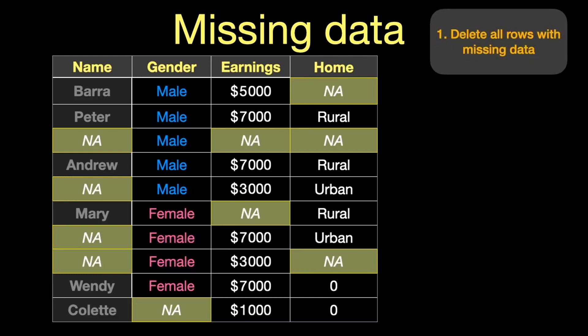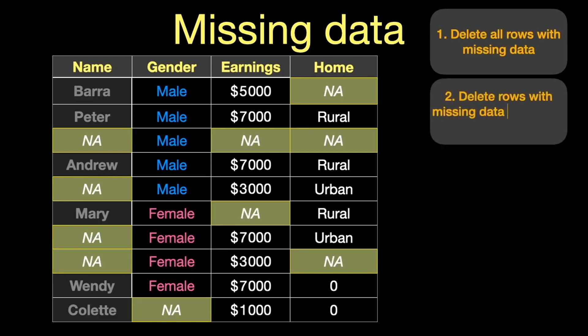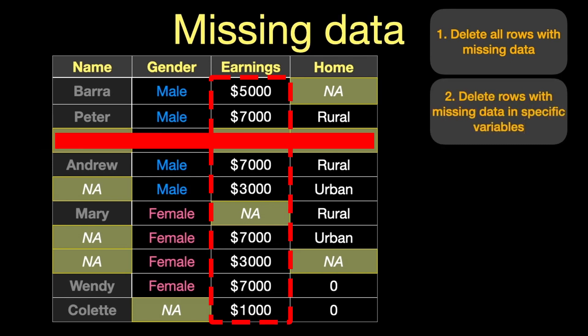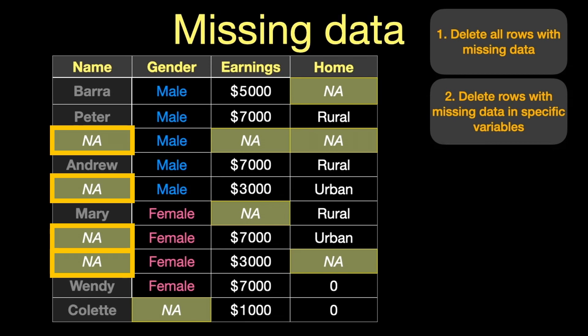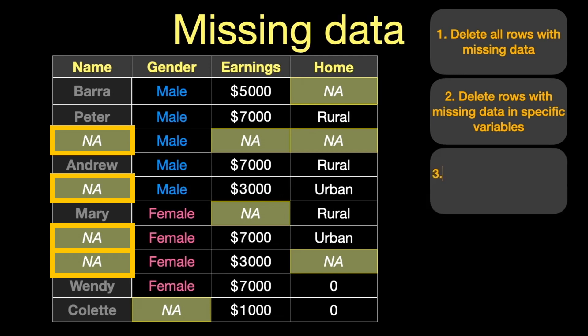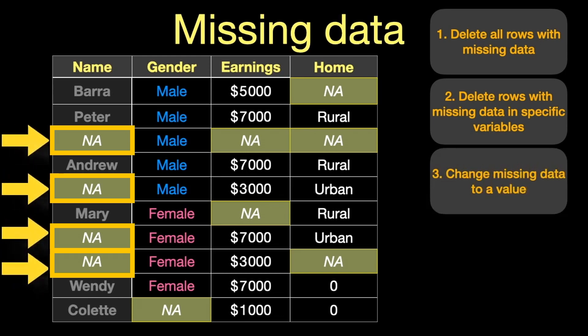Something else you can do is delete just the rows where there is missing data from a specific variable. For example, if we look at the names variable, we don't care too much that actual names are missing because we're not going to analyze this data by individual names. Our third strategy is we might want to change missing values in a particular variable to something else — in this case we've changed them to 'unknown.'